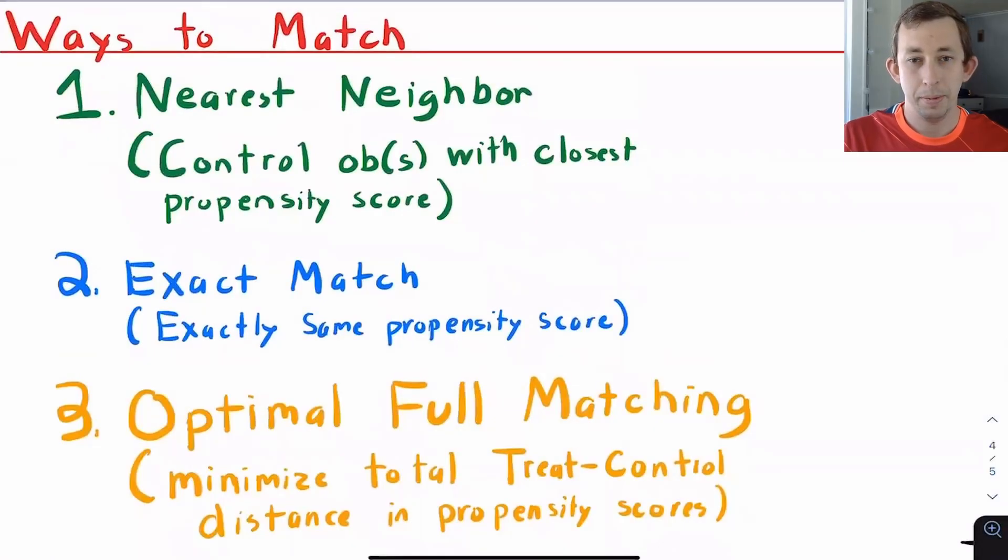As you might imagine, lots of people much smarter than I have come up with different ways to match people based on propensity score. Here are just a couple, you might see others, but here are just a couple that I think are helpful.